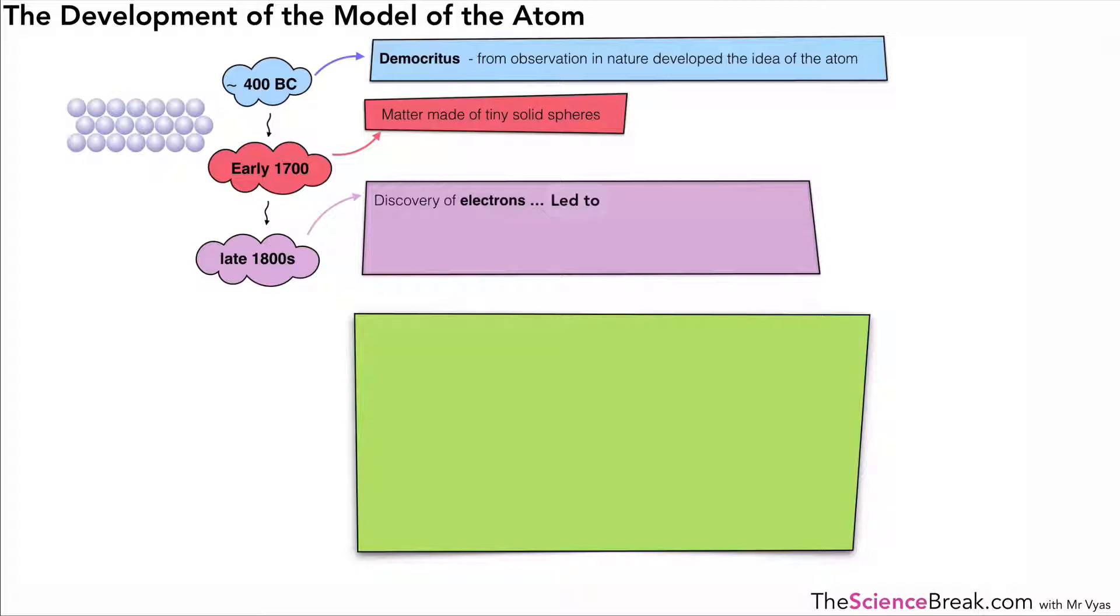This combined with knowledge at the time led to what we call the plum pudding model of the atom. This is a very important key term and it was basically how the atom was thought to exist: the ball of positive charge with negative electrons embedded in the ball of charge. So it would look something like this with the black dots being the electrons and the red space being the positive charge.